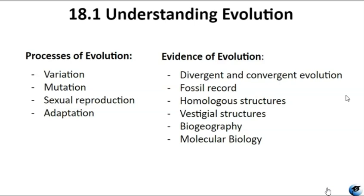Similar traits can evolve independently in distantly related species through convergent evolution. For instance, both bats and insects have evolved flight and possess structures called wings, which are adaptations for flight. However, bat and insect wings originated from different original structures. This phenomenon, known as convergent evolution, occurs when similar traits emerge separately in species without recent common ancestry. Although these traits have similar structures and functions, such as flying, they evolved completely independently.